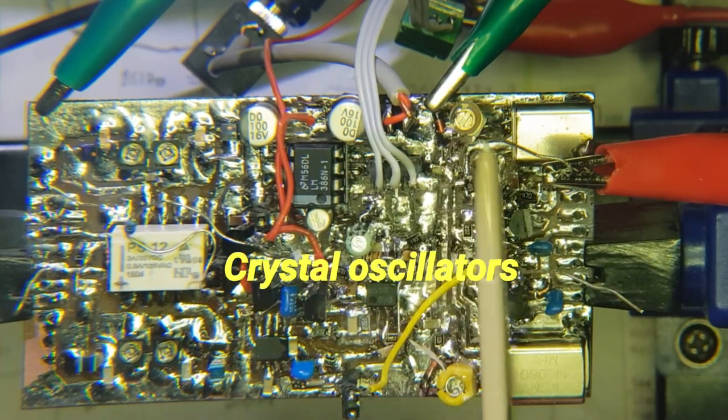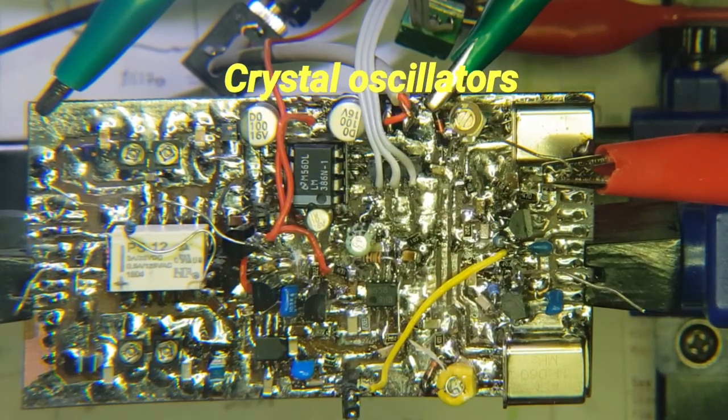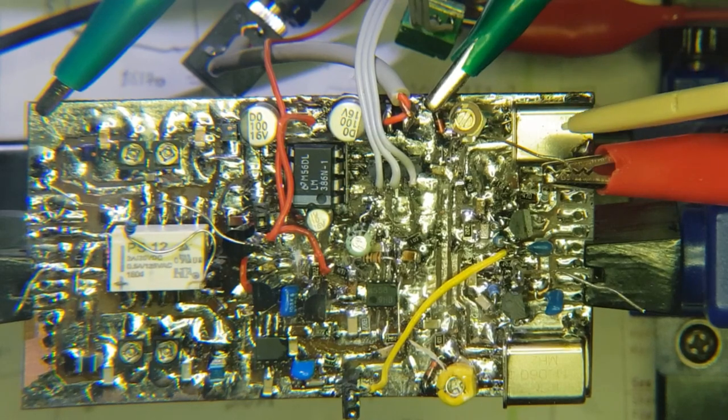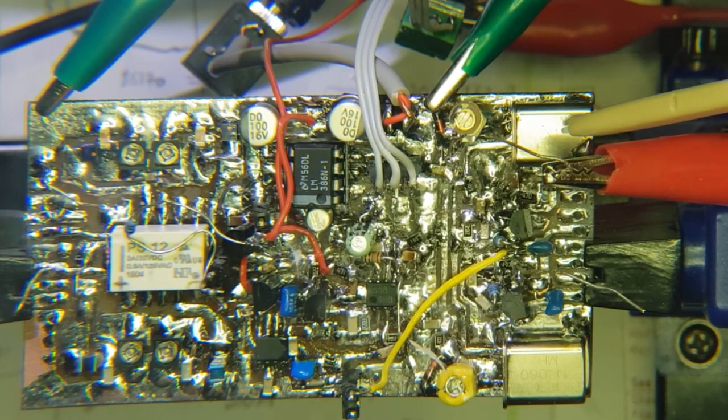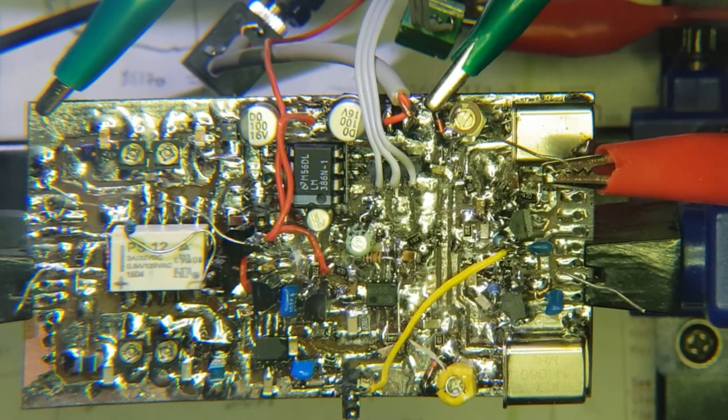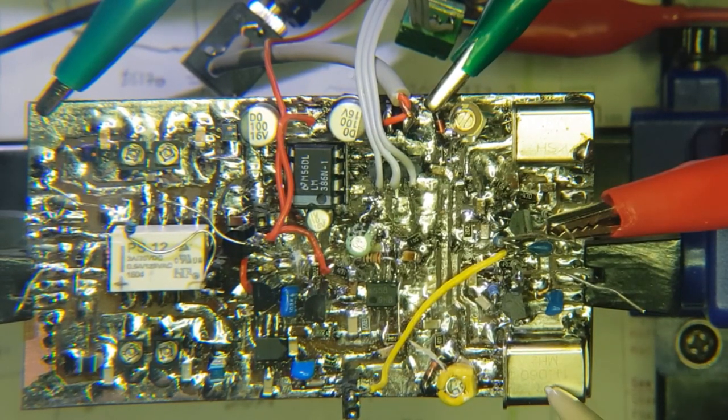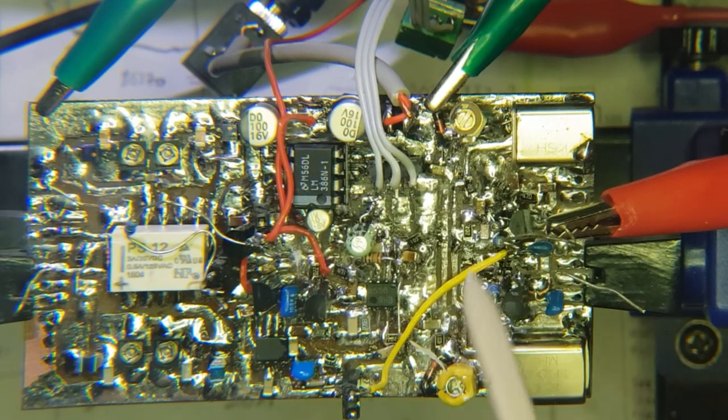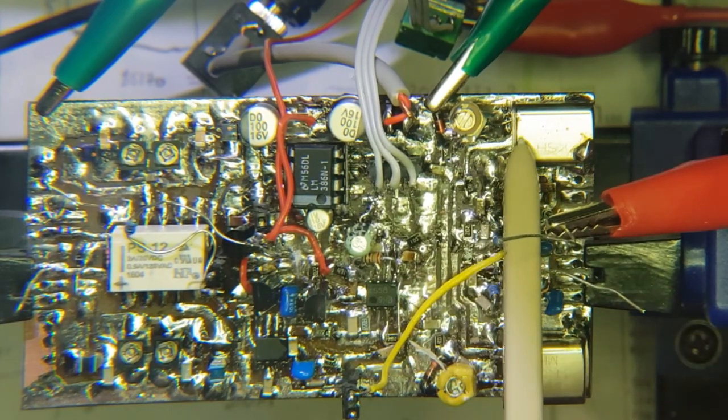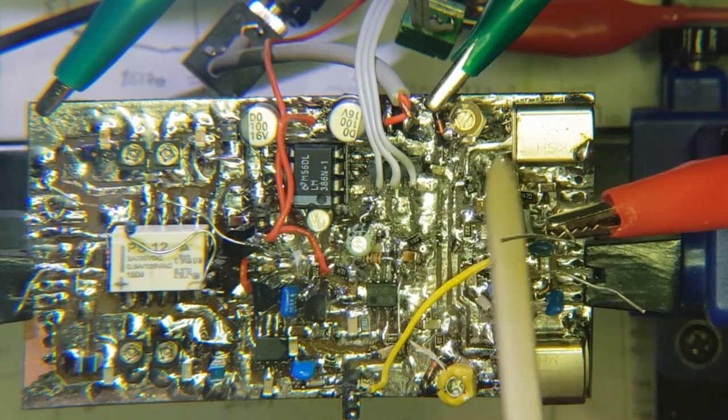This section of the board are the two crystal oscillators. Remember, this is going to be a two-channel, two-band receiver transmitter. This is the 40-meter crystal here and two 20-meter crystals here.